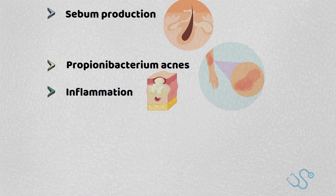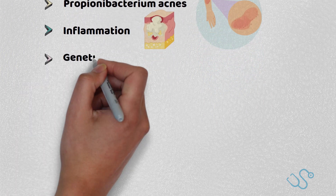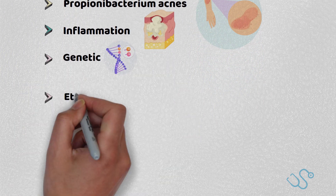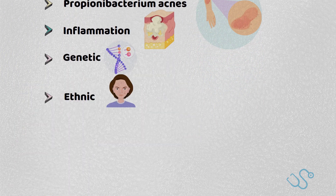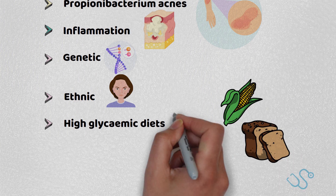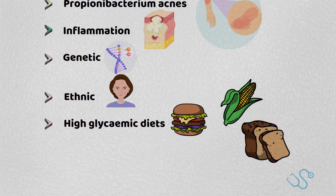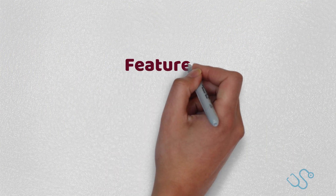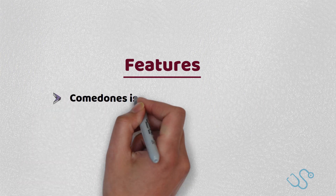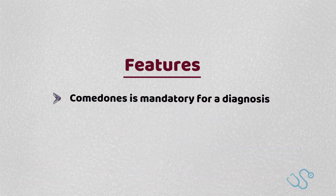There's also some evidence suggesting genetic and ethnic factors, as well as correlation with high glycaemic diets and acne vulgaris. Acne really only affects areas of the body where there's a high density of pilocebaceous glands, like the face. Additionally, NICE suggests that the presence of comedones is mandatory for a diagnosis.